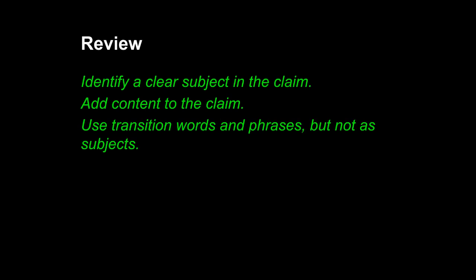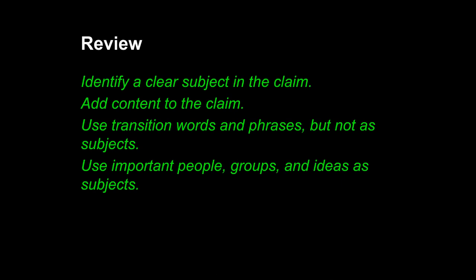Let's review the principles for today. First, identify a clear subject in your claim, your topic sentence. Second, add content to the claim — something as simple as "three" is content you have added, indicating you know where you're going with your answer. Third, use transition words and phrases, but not as subjects — separate them, often with commas, from the subject. And lastly, use important people, groups, and ideas as subjects — something that can act, something that is important. This will lead to stronger sentences and usually stronger verbs. Your writing will flow, it will carry more authority, and you will more clearly state what your teacher wants you to show.